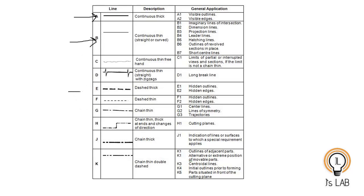In engineering graphics, the most frequently used lines are: continuous thick line, continuous thin line, dashed thick and dashed thin line, chain thin line, and the cutting plane line. This has been an introduction to types of lines used in engineering drawing — when we do actual drawings I will show you the application of each line. If you have any comments or suggestions please write in the comment section. Thanks for watching, bye bye.